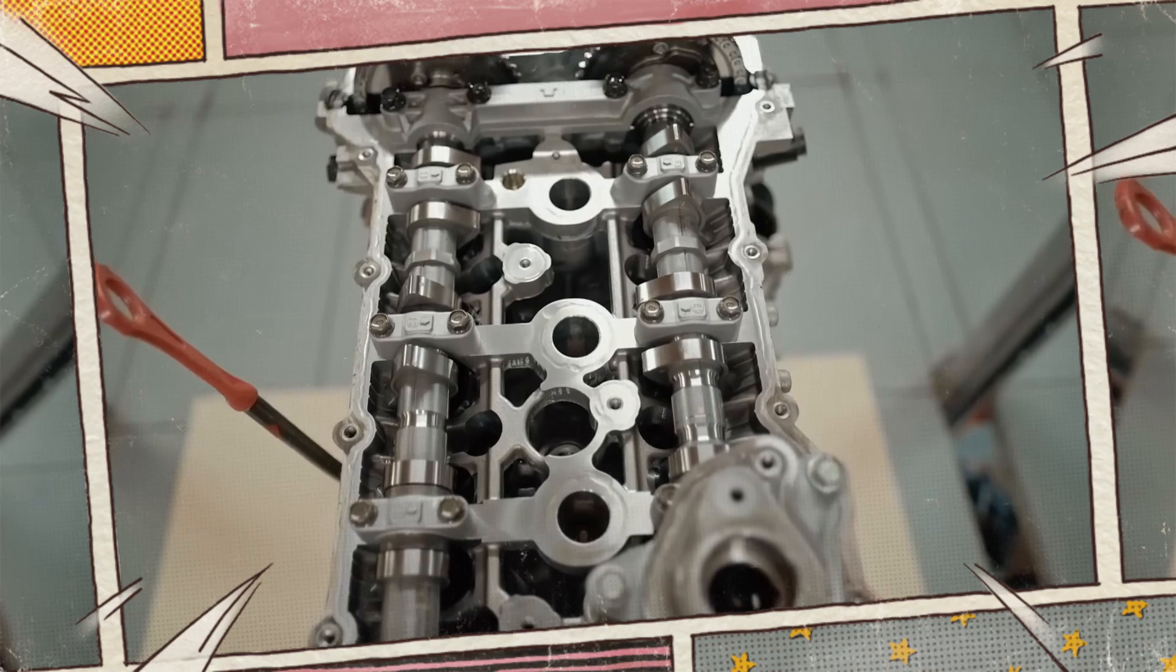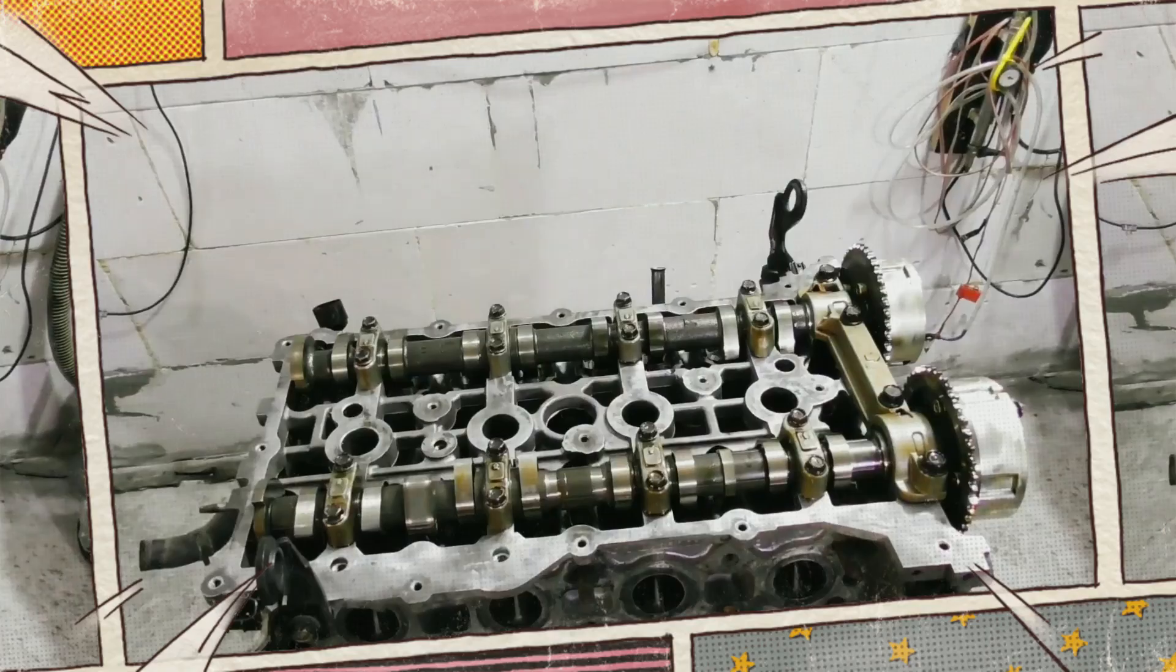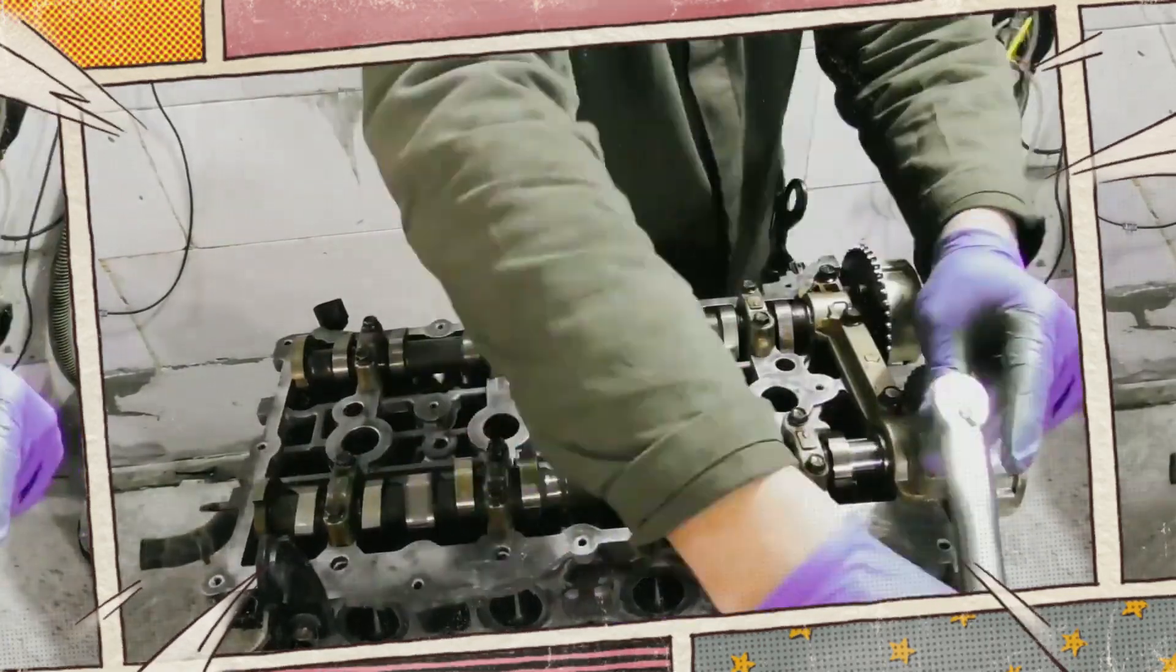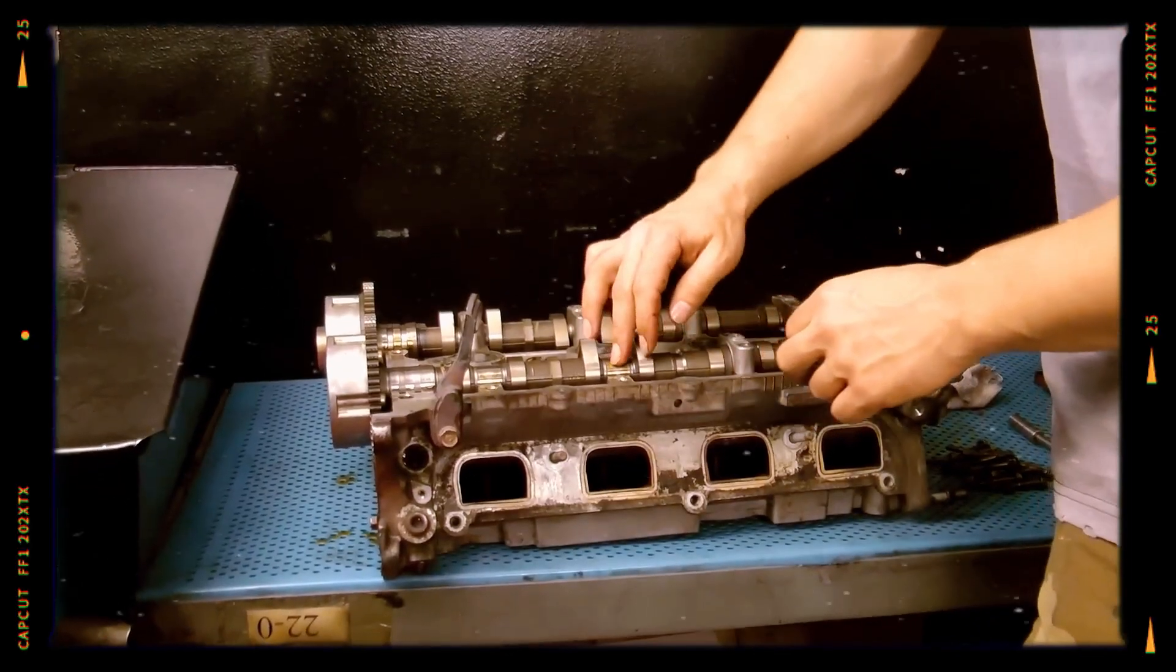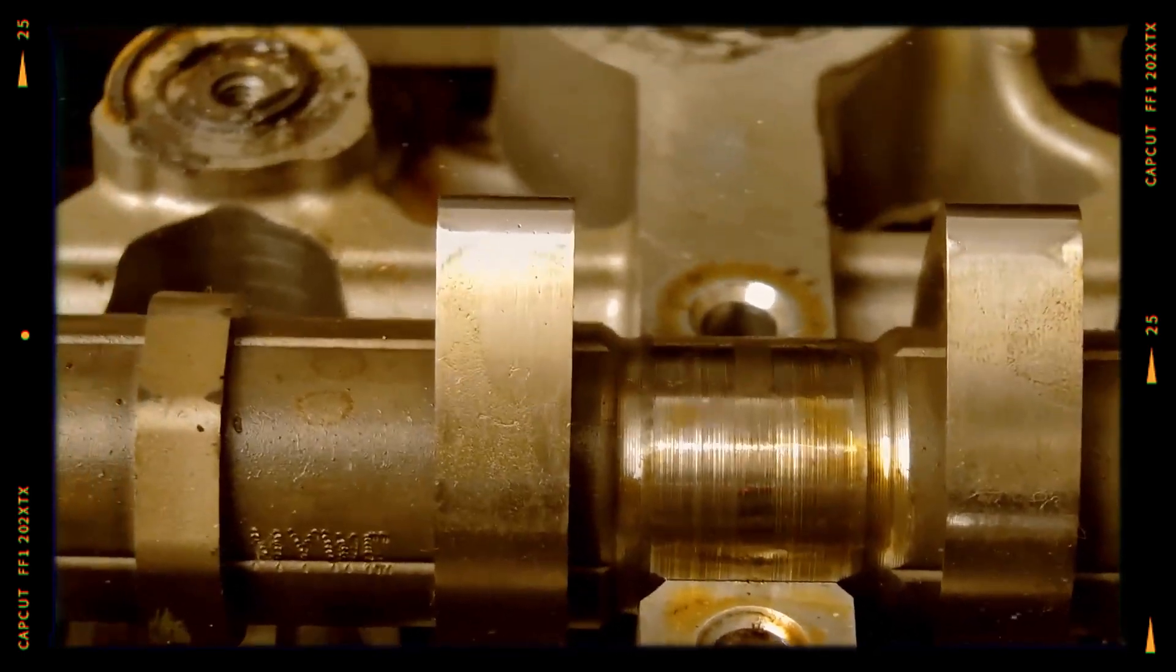Early Theta engines used intake side CVVT only. Later Theta 2 motors gained dual CVVT and 2015 plus versions add an electrically driven E-CVVT phaser on the intake cam.